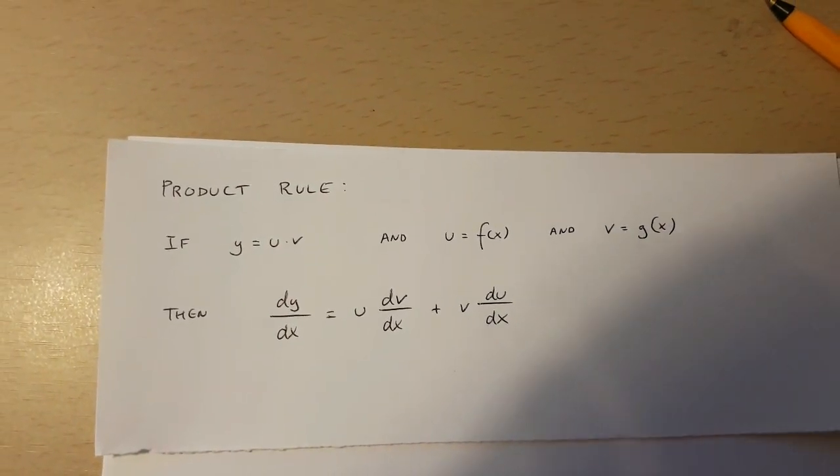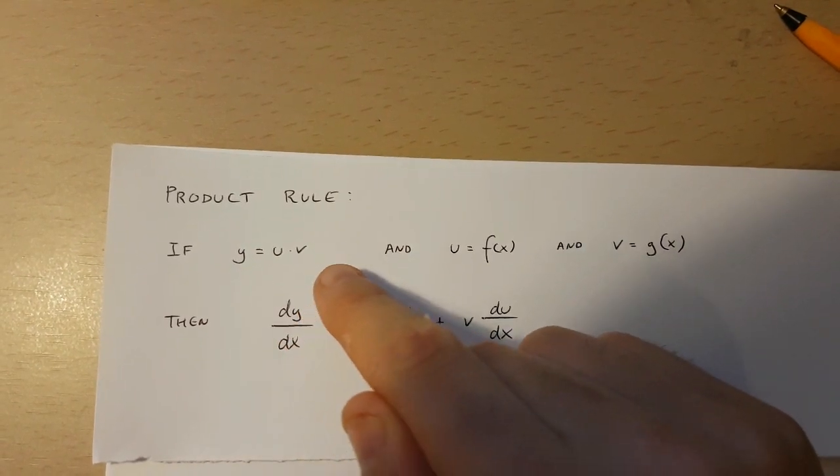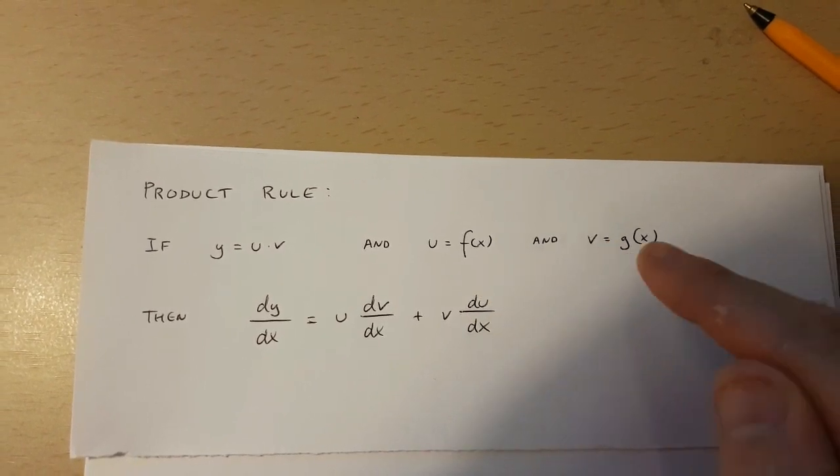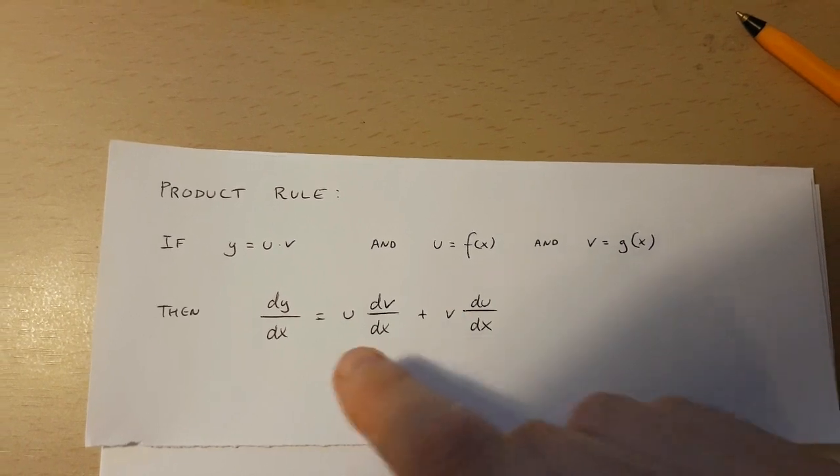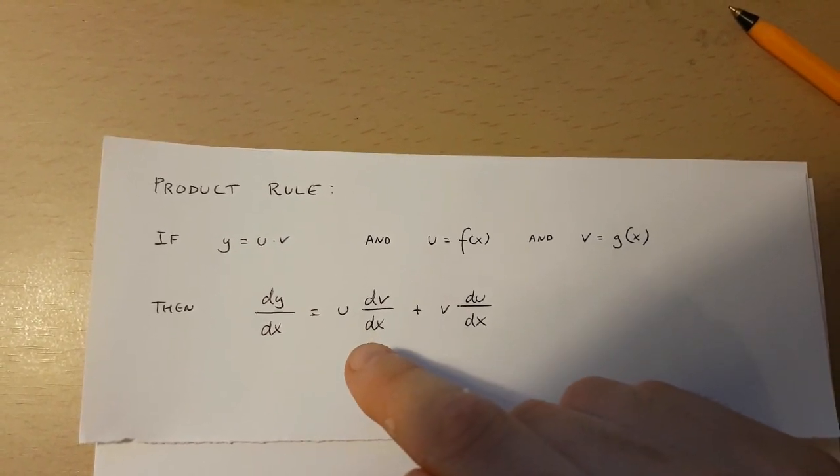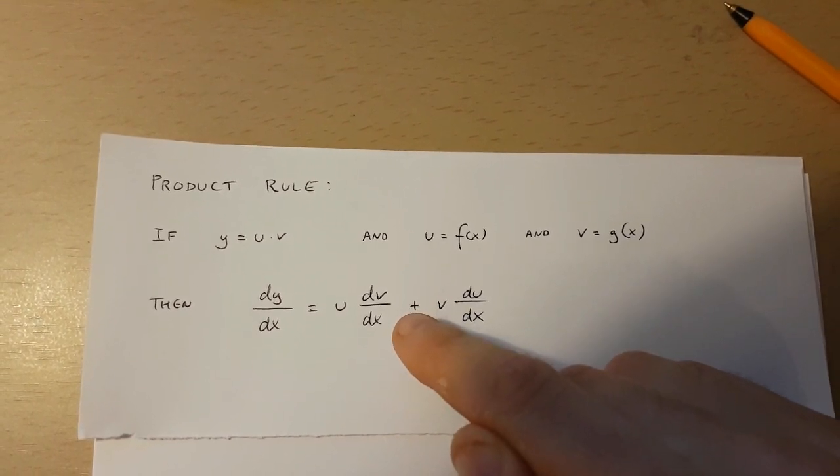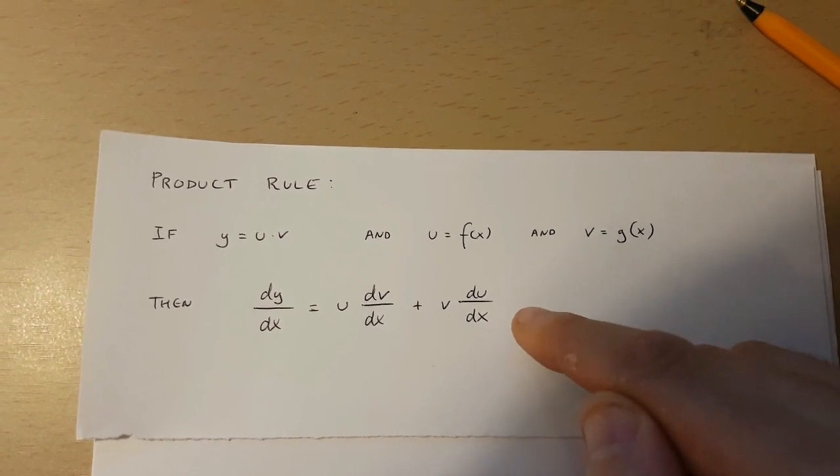Now the product rule goes like this. If y equals u times v, and u is a function of x, and v is a function of x, then dy over dx is equal to u times dv over dx plus v times du over dx.